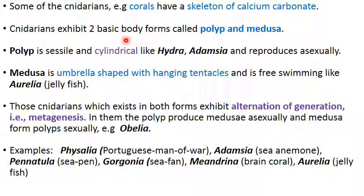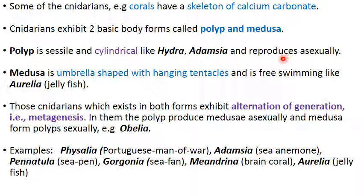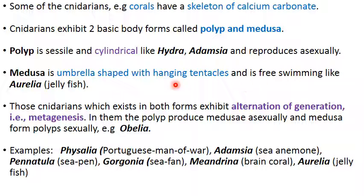The two basic body forms are the polyp and the medusa. The polyp is sessile — it stays in one place — cylindrical in shape, like Hydra and Adamsia. The polyp reproduces asexually by budding: a bud forms and detaches. The medusa is umbrella-shaped with tentacles at the margins and is free-swimming, like Aurelia (the jellyfish).